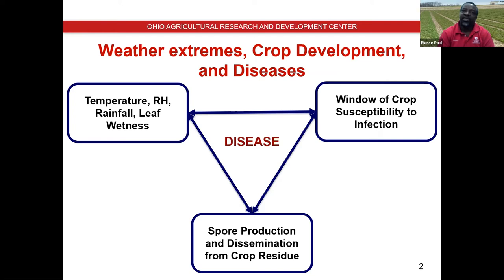I'll also focus on the effect of weather on spore production in crop residue. We've got lots of fields planted no-till or minimum tillage, and weather conditions can affect how many spores are produced and how long spore production continues during the growing season. The coincidence of spore production and that window of susceptibility can affect how much disease you have and how much mycotoxin contamination you've got in the grain.